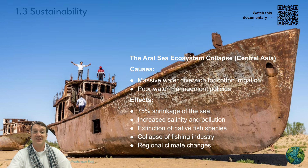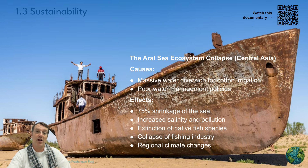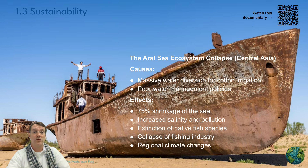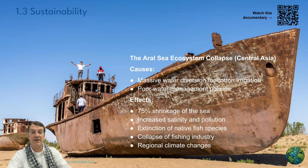The next case study is the Aral Sea, an ecosystem collapse in Central Asia spanning about five countries. It was caused by a massive Soviet-era water diversion project for cotton irrigation. Poor water management resulted in about a 75% shrinkage of the sea, which tremendously increased salinity levels and concentrated pollution.